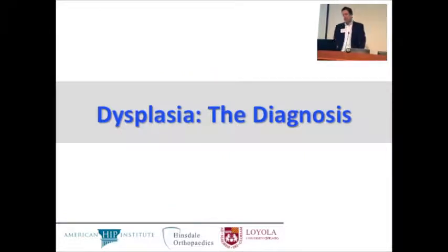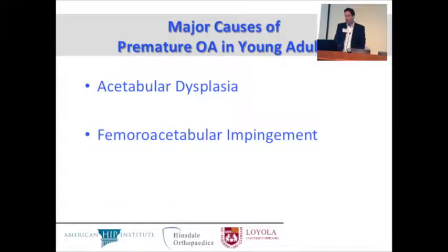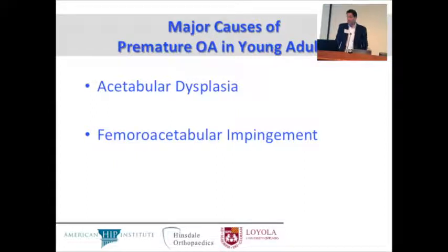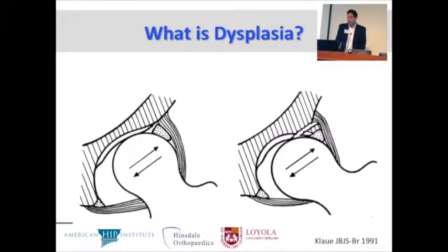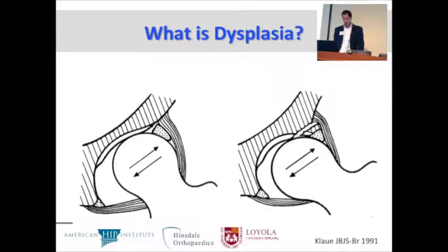Dysplasia is probably one of the major causes of premature osteoarthritis in young adults, right next to femoroacetabular impingement. Not everything is FAI, not everything is impingement. Dysplasia is an edge-loading phenomenon in which there is damage to the labrum at the edge or to the bone at the edge of the acetabulum.